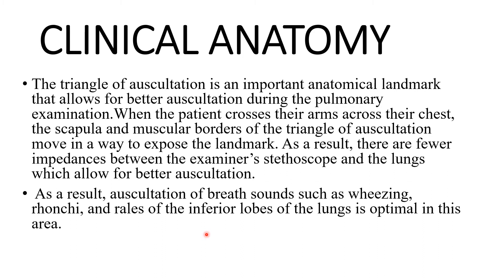Inside the thoracic cage we can identify the right and left lungs — strictly speaking, the lower lobes of the right and left lungs, which are present at the level of the triangle of auscultation.